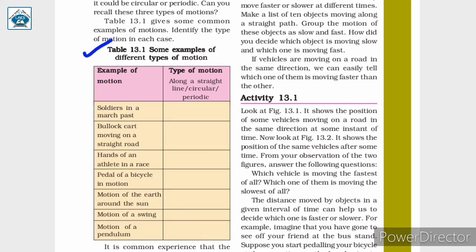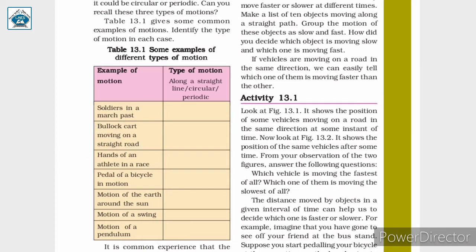In table 13.1, we are given some examples of different types of motion and we need to identify the type of motion in each case. First, we are given soldiers in a march past — the type of motion is along a straight line. Next, a bullock cart moving on a straight road — since the road is straight, the type of motion is again along a straight line.